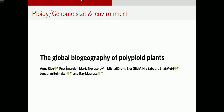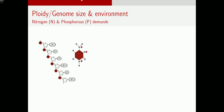Now I'll talk about polyploidy and genome sizes as responses to environmental factors — both edaphic factors like soil nutrients, and climatic factors like temperature and precipitation. DNA itself needs a lot of nutrients to be built: the phosphate backbone requires a lot of phosphorus, and the nucleotide bases (like cytosine) contain a lot of nitrogen. So does it follow that a species with a larger genome would also need more nitrogen and phosphorus — and for a plant, where does it get this? From the soil.